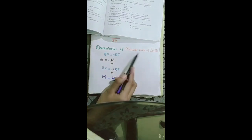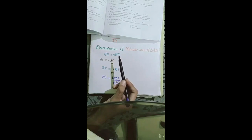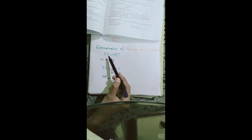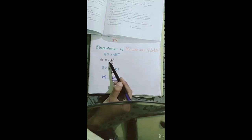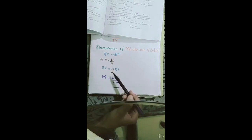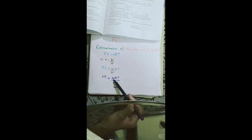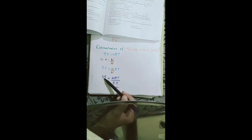From pi·V = nRT, since the number of moles n equals given mass w divided by molecular mass M (n = w/M), we substitute to get pi·V = (w/M)RT. Rearranging to find molecular mass: M = wRT / (pi·V). This equation allows us to determine the molecular mass of a solute from osmotic pressure measurements.